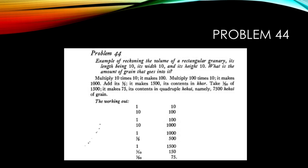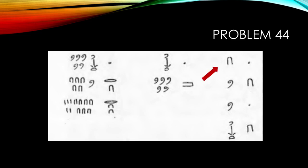Now that we know how to solve the problem, we're going to look at the hieroglyphic solution. As you can see, we first multiply 10 by 10. It gives you a hundred. Then we multiply the hundred by 10. It gives you a thousand.